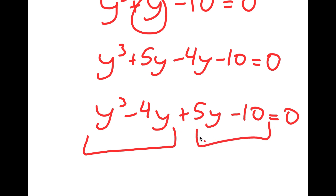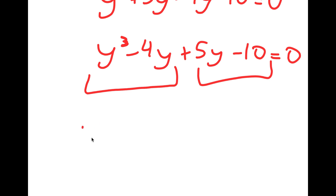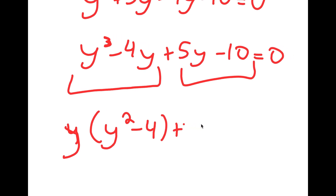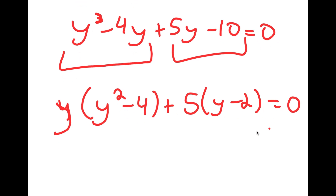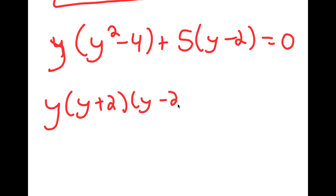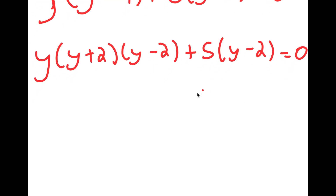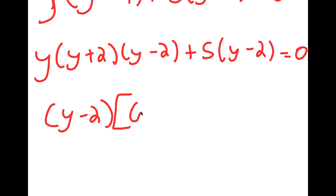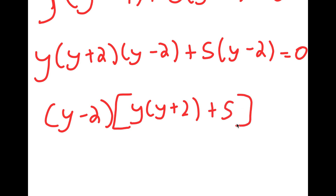Now if I factor by grouping, I can start with y to the power of 3 minus 4y — I'm going to factor out y — so I get y times y squared minus 4, plus from 5y minus 10, I have 5 times y minus 2 is equal to 0. Now y squared minus 4 I can rewrite as y plus 2 times y minus 2. Notice that the only common factor for all these terms is y minus 2.